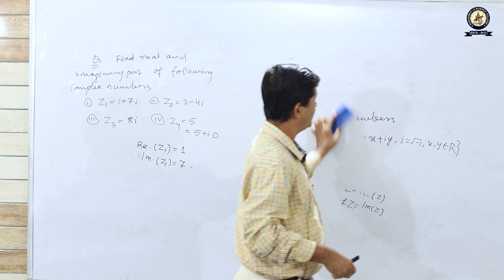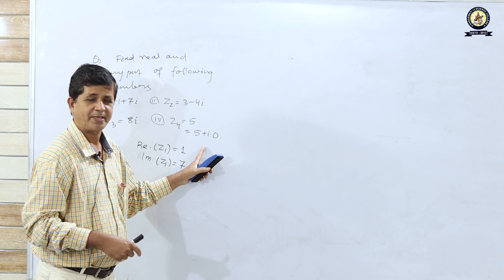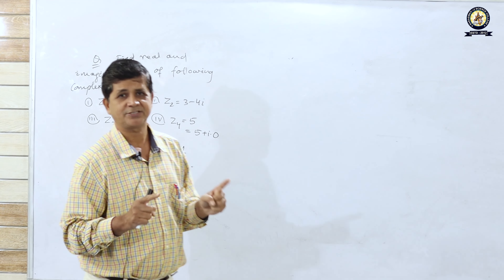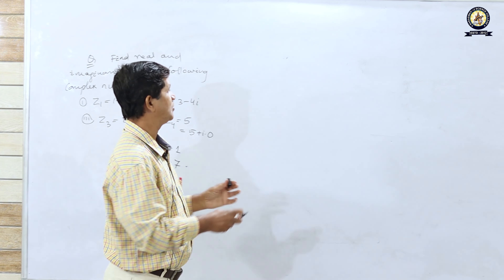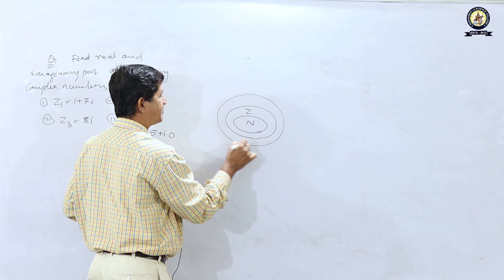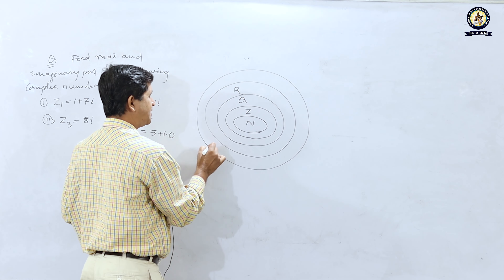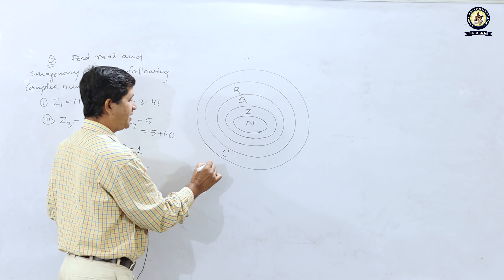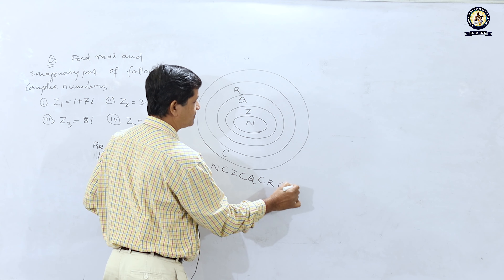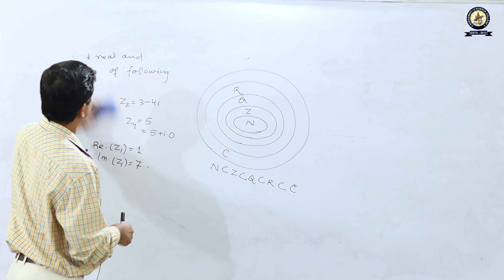So the first key question is: can every real number be a complex number? Yes, because 5 is a real number and it can be expressed in complex number form. But every complex number cannot be a real number. So the complex number set is the larger set and the set of real numbers is a subset. From the Venn diagram: N ⊂ Z ⊂ Q ⊂ R ⊂ C, this is the order from smaller to larger sets.